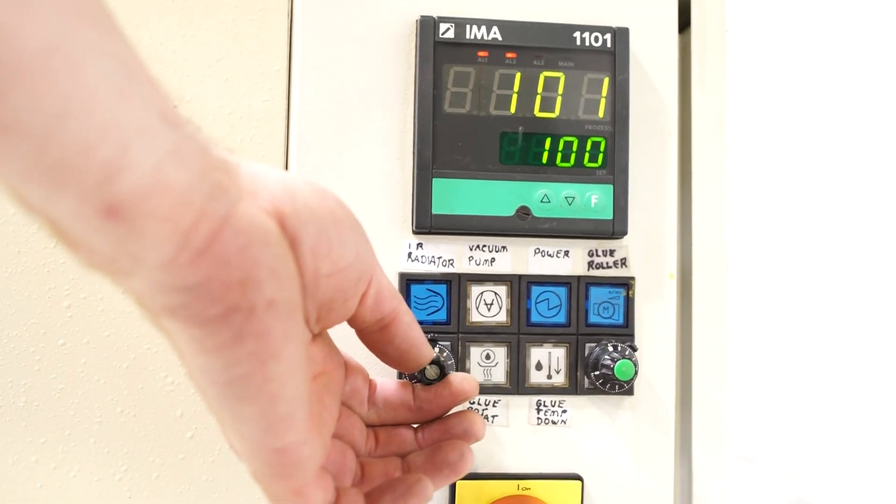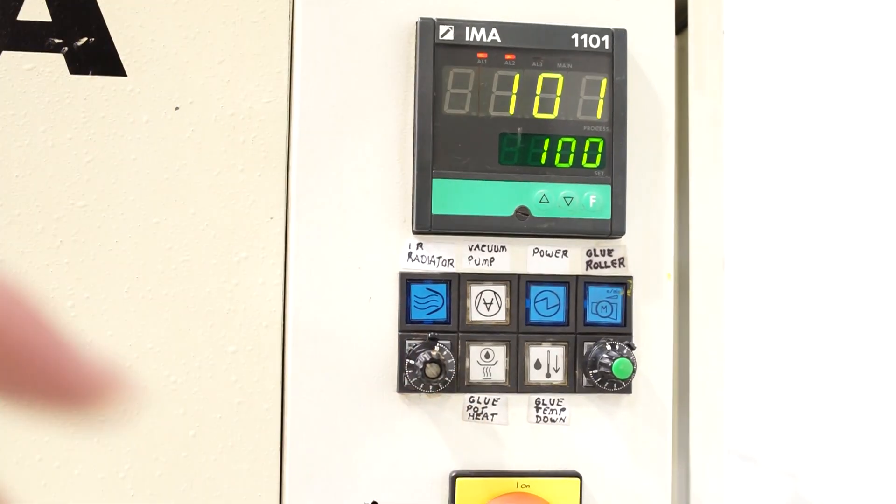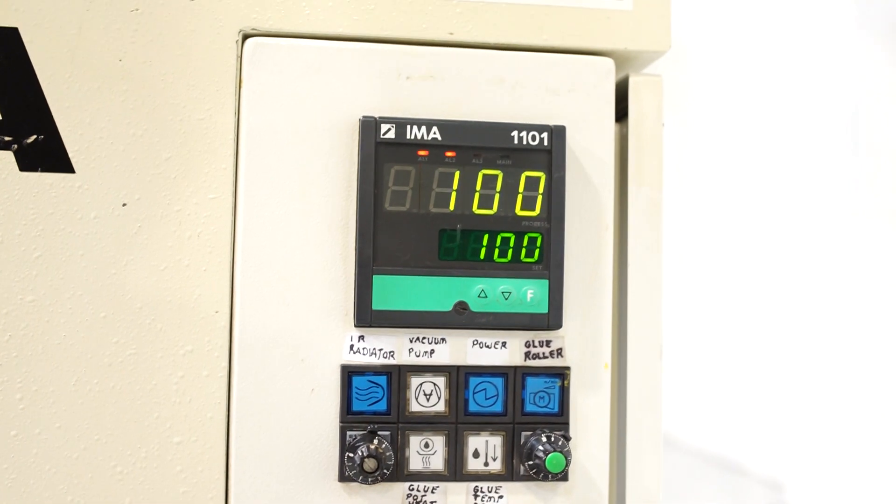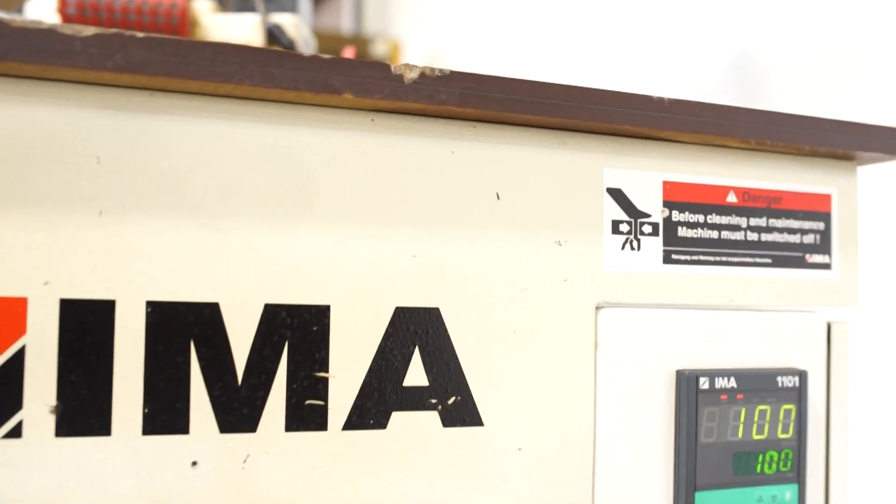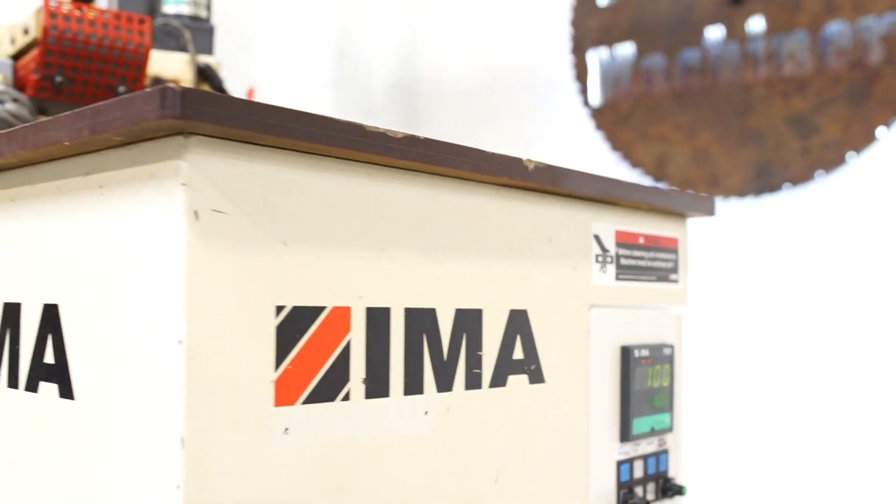This here is currently set in one position. One fixed feed speed. It can be changed via the VFD in here. But they have it set for just an idle speed, so this way again you don't lose the glue pot.